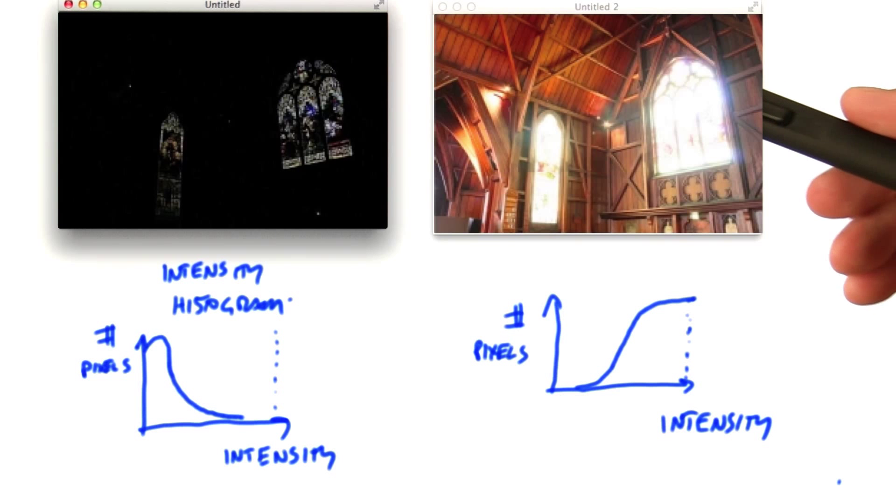If we look at the brighter image, we see a lot more detail in some areas, but bright parts of the image, like the stained glass window, are completely washed out. We can classify this in terms of histograms.